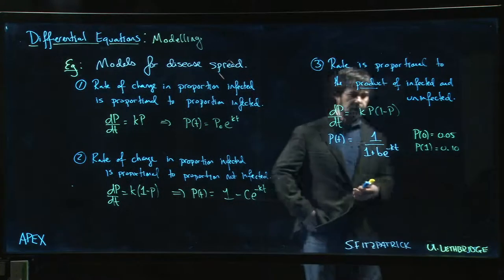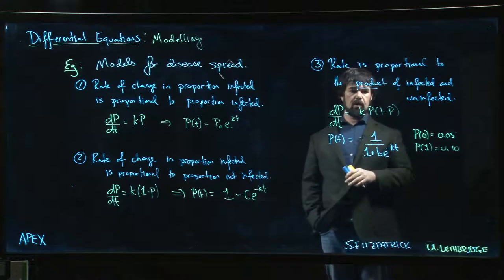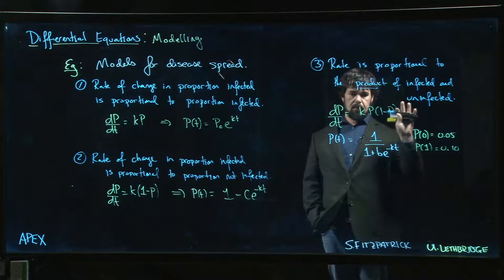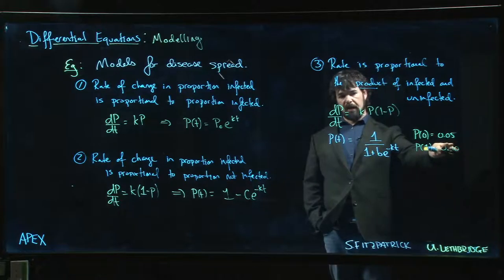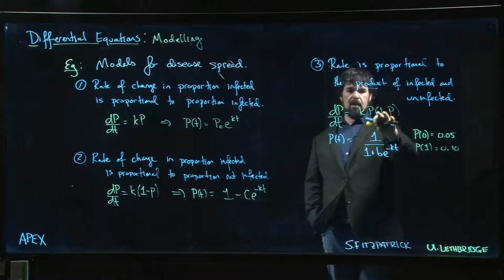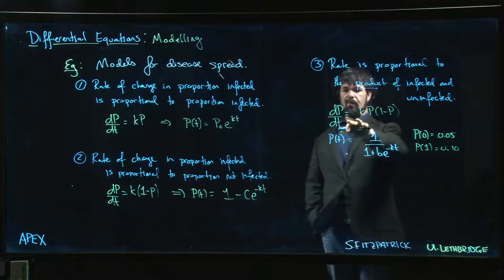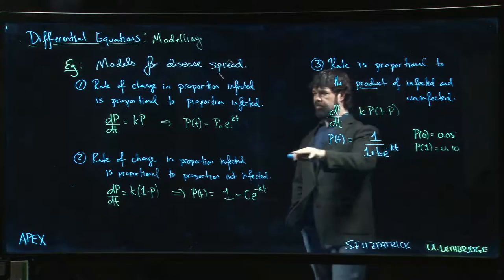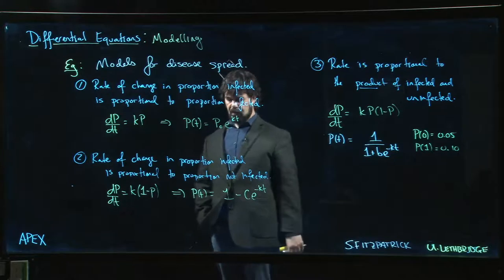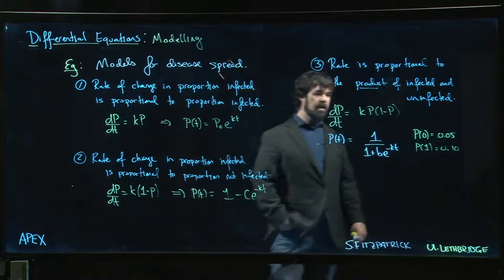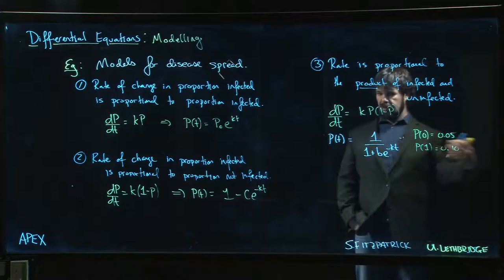The interesting thing about the logistical equation is that if you start with a small proportion of the population affected, then this value is close to 1 and you have something which is very similar to the exponential growth equation.